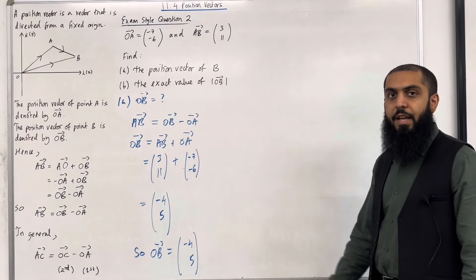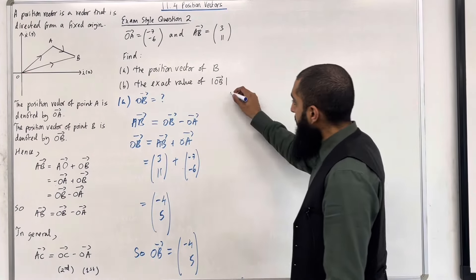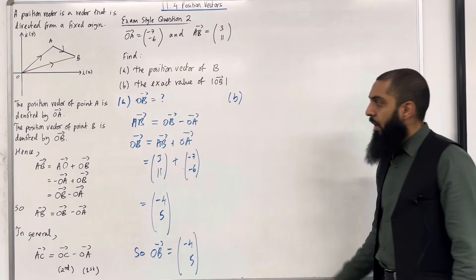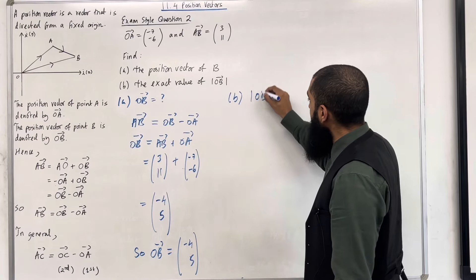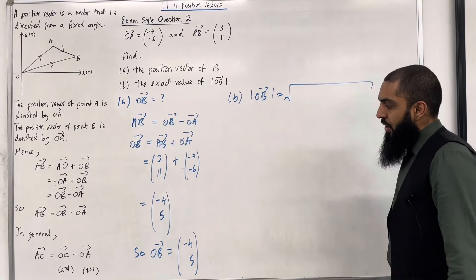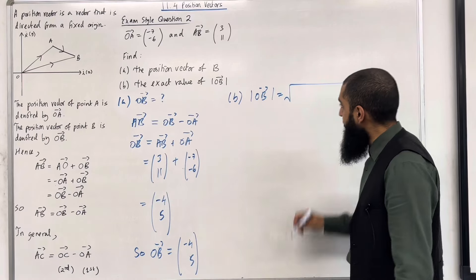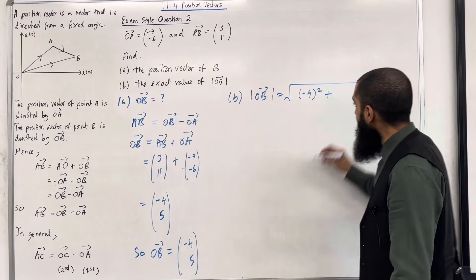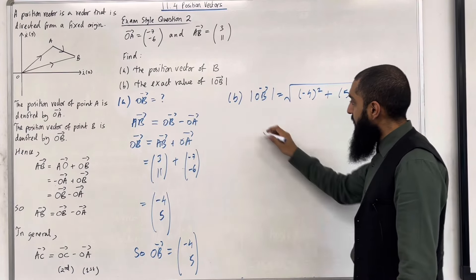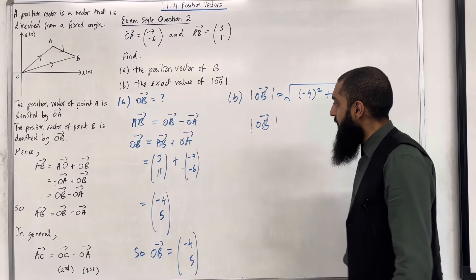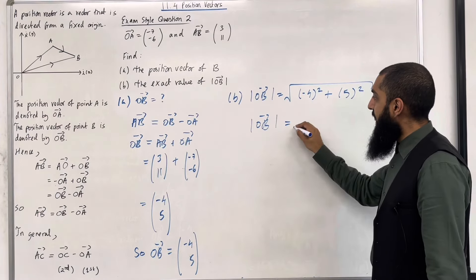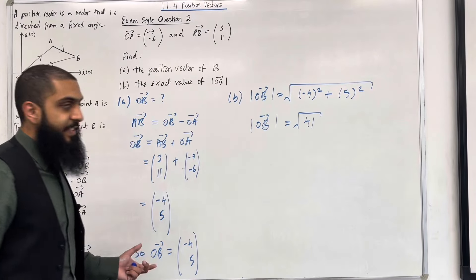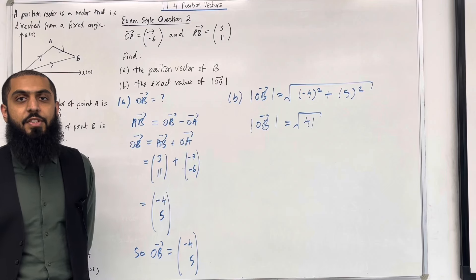Moving on to part B of the exam style question. So in part B, we want to work out the exact value of the magnitude of O to B. So the magnitude of O to B is given by square root. You take your I component, which is minus 4, and you square it. Plus you take your J component, which is 5, and you square it. So I can put this into my calculator, and I get that as a surd, the magnitude of O to B is equal to square root 41. Okay, so that there completes exam style question 2 in this teaching video 11.4 position vectors.